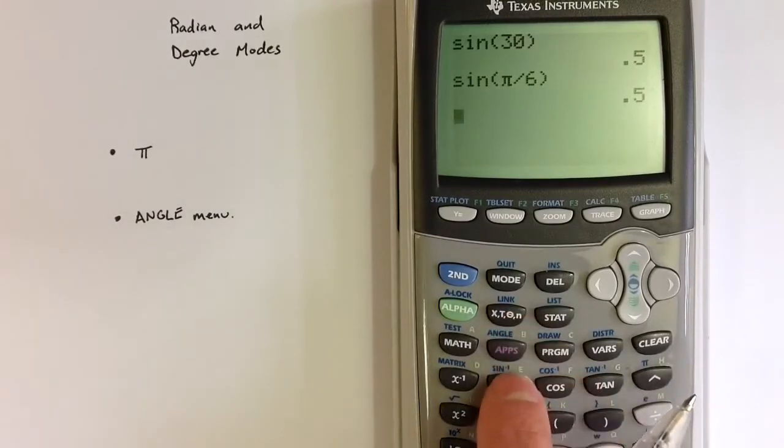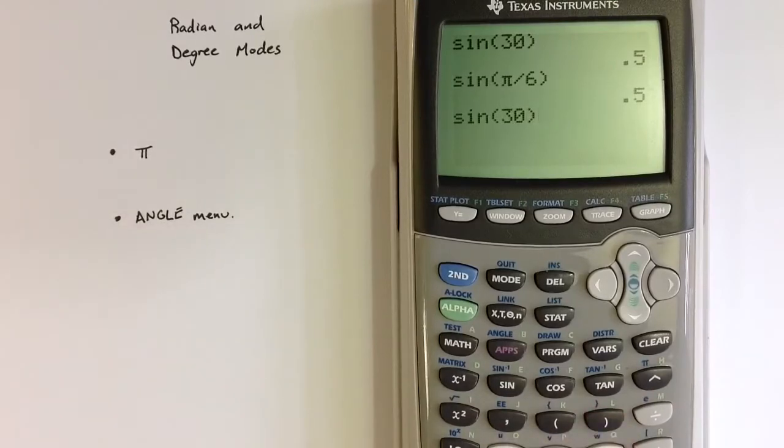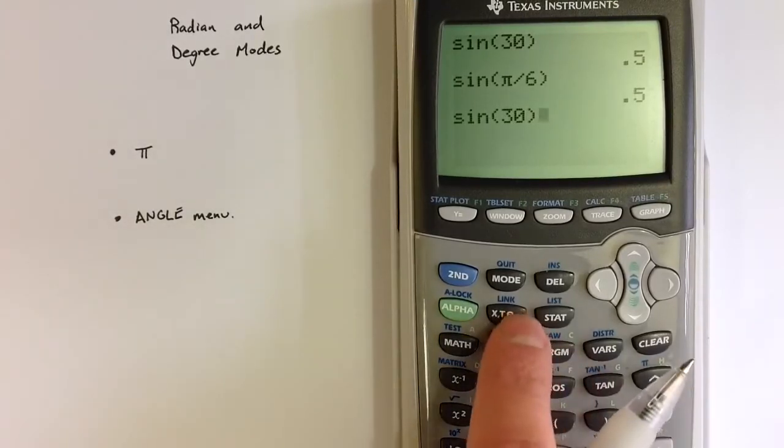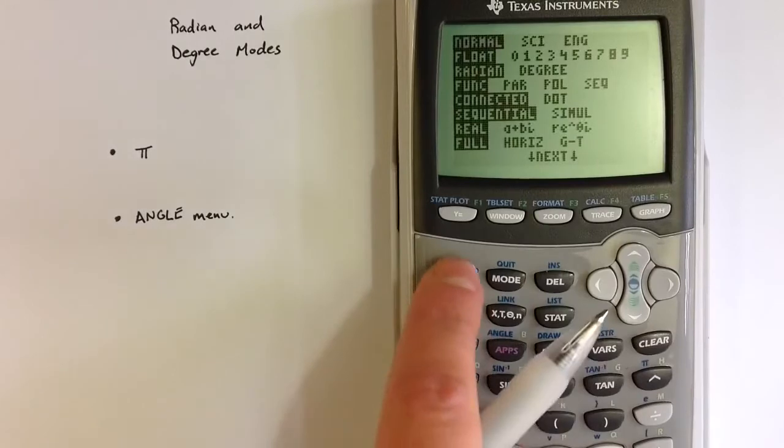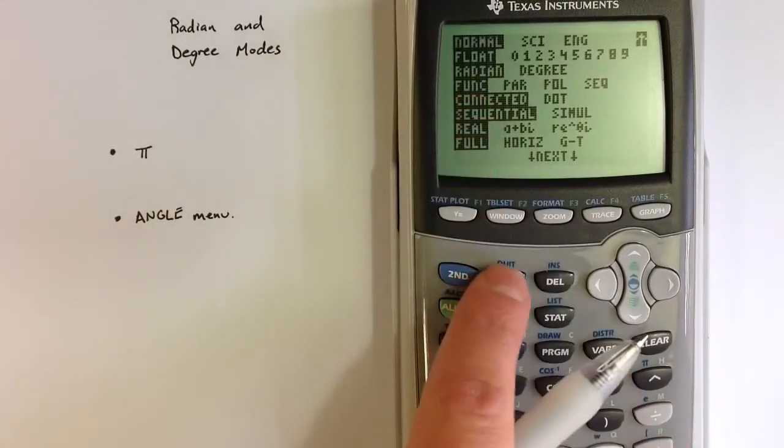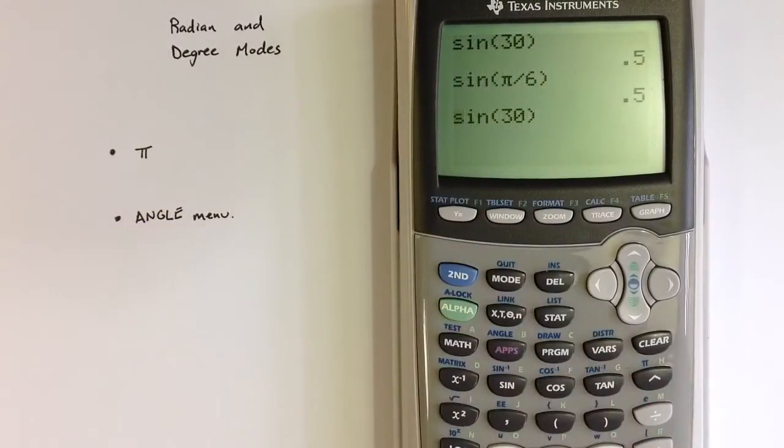But if I were to say sine of 30, sine of 30 in radian mode corresponds to sine of 30 radians, which is a very different number. You need to be aware whether you're in degree or radian mode.